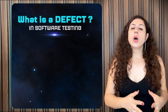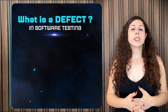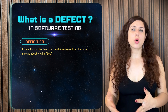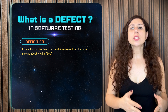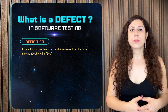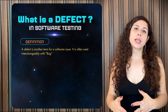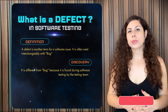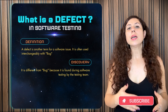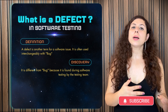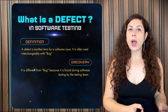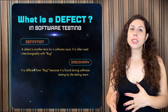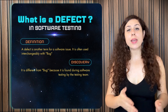Developers need to fix the bug to ensure the software works correctly. Now, what is a defect? A defect is another term for a software issue — it is used interchangeably with bug, but the main difference is that it is found during software testing by the testing team. When the testing team tests the software and compares its functionality with the requirement specification, any deviations or missing functionality are logged as a defect.